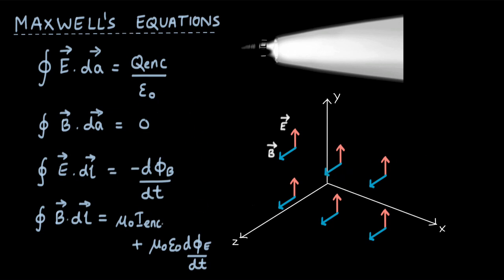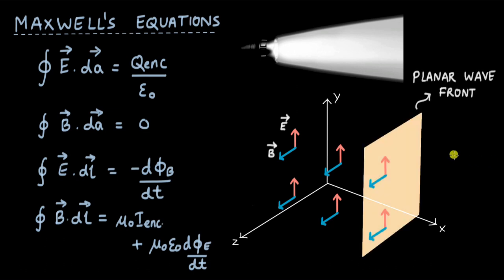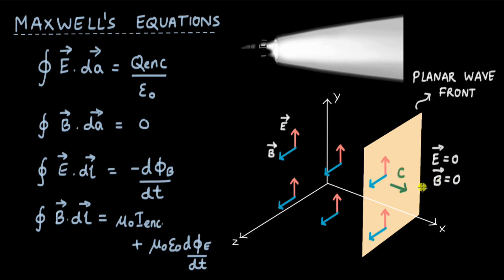Before we consider each of the four equations, let's imagine that all space is divided into two regions by a plane perpendicular to the x-axis — we can call this a planar wave front. At every point to the left of this plane there is a uniform electric field in the y-direction and a uniform magnetic field in the z-direction, but both fields are zero to the right of this plane. This planar wave front is moving to the right — in the positive x-direction — with some speed c that we do not know right now.